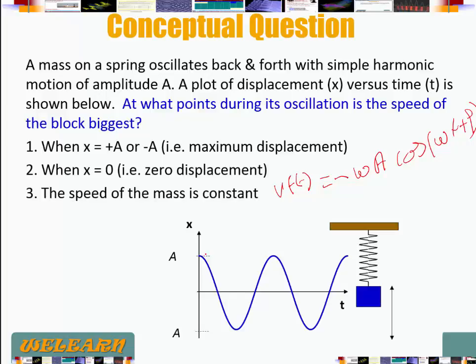So when x is a maximum, the velocity is 0. When x is 0, the velocity is a maximum. So I'm going to graph it here. So the velocity is going to be a maximum when x is 0.